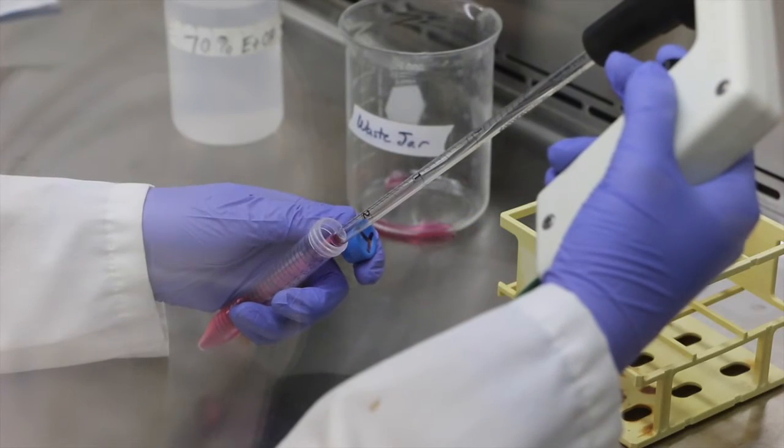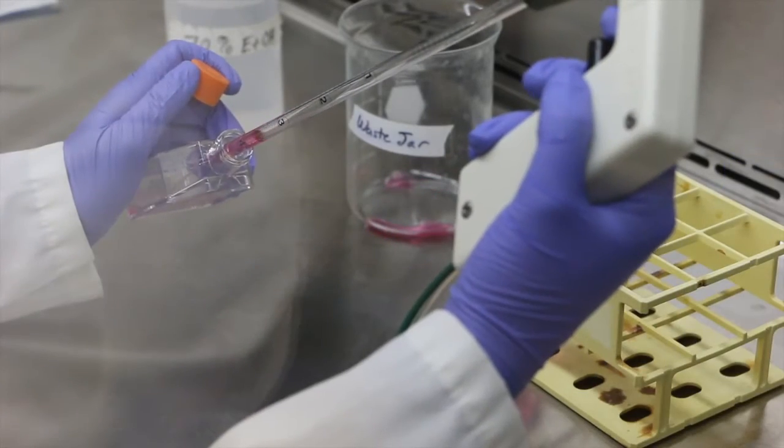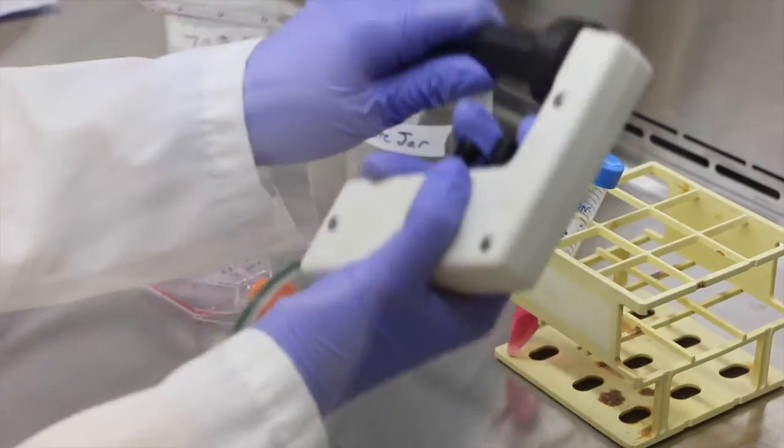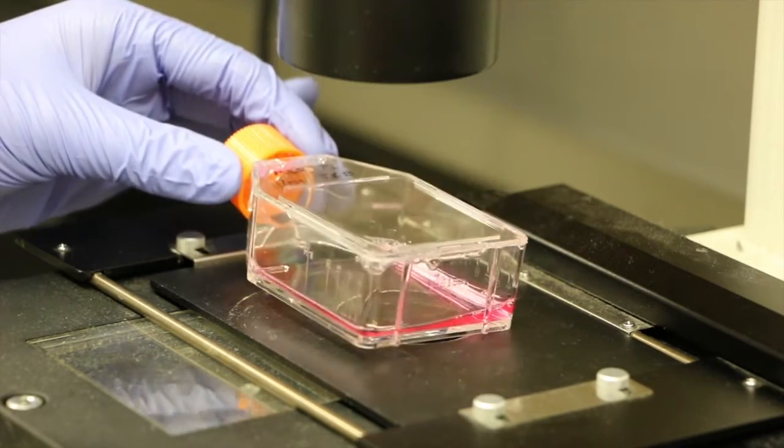We'll be using trypsin as our cell dissociation reagent. Add 2ml to the culture flask. Depending on the cell line being used it can take anywhere from 10 seconds to 1 minute for the trypsin to begin lifting the cells off the surface of the flask.